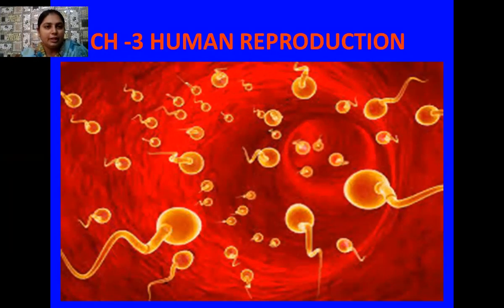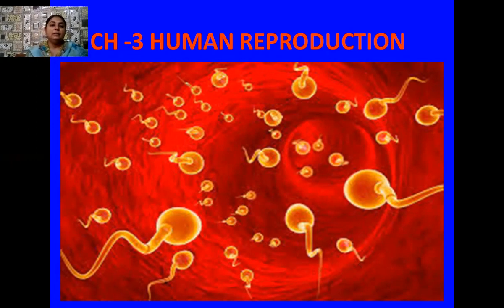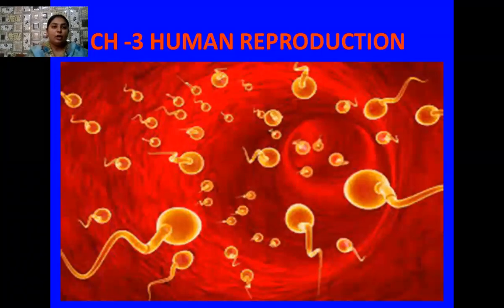As the name itself indicates, gametogenesis means formation of gametes. Gametes are haploid cells — sperms in the case of male and ovum in the case of female. We have studied in 10th class that sperms are produced in the male reproductive organs which are the testes, and the ovum is produced in female reproductive organs which are the ovaries. One pair of testes and ovaries are present in male and female reproductive systems respectively.